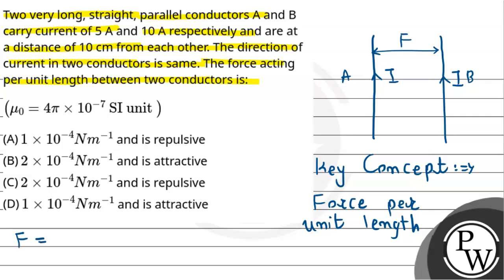is equal to μ₀ upon 2π into i₁ i₂ divided by r. Here i₁ and i₂ are the currents flowing through the two conductors, μ₀ is the magnetic permeability, and r will be the distance between them.